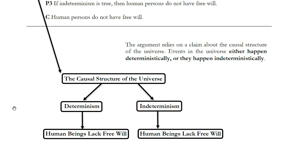Philosophers debate among themselves whether determinism or indeterminism is true — even physicists jump into this debate. But notice that the claim of the argument is that no matter what we think about the relationship between cause and effect, human beings do not have free will. At this point there should be a few questions in your mind: what is determinism, what is indeterminism, and why do both undermine our ability to have free will?